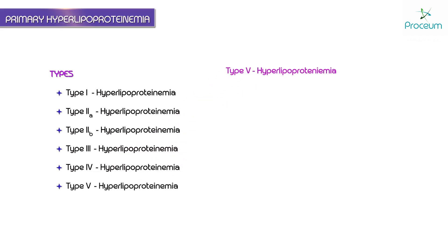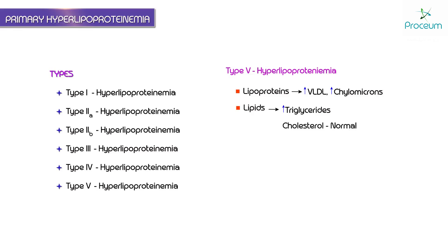In type 5 hyperlipoproteinemia, the lipoproteins increased are VLDL and chylomicrons. The lipids elevated are mainly triglycerides, whereas cholesterol is normal. There is no risk of atherosclerosis in type 5, so it does not require any treatment. This covers primary hyperlipoproteinemias, which are either familial or genetic in origin.